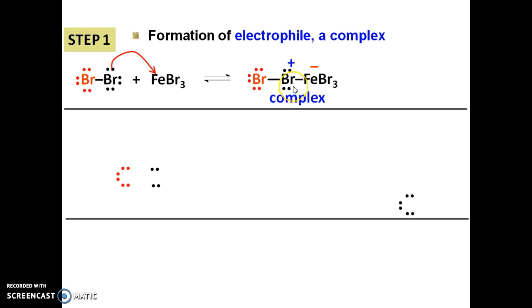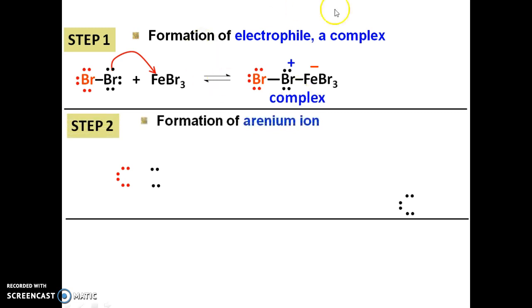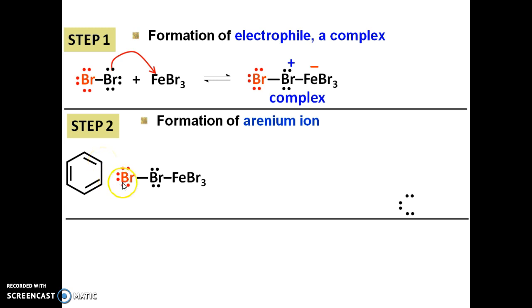We already produced an electrophile in the form of a complex, which will be used in step number two: formation of the arinium ion. We use our benzene because we want to substitute one H with the electrophile. We copy our benzene and the complex from step number one. As we know, benzene is a nucleophile — it has 3 pi bonds, so during attack, we choose one pi bond to attack the electrophile.